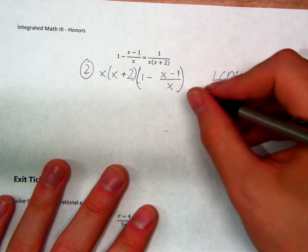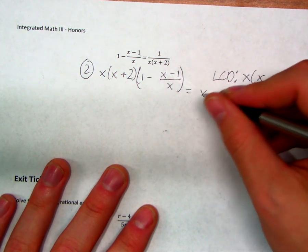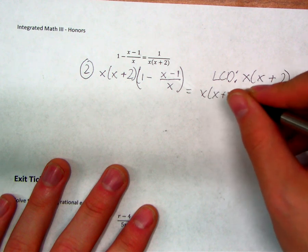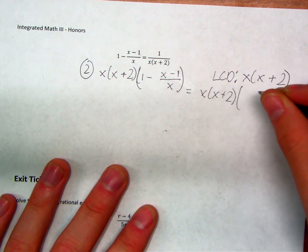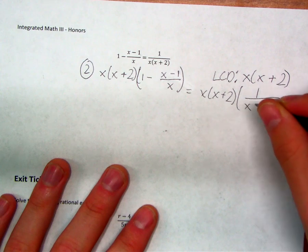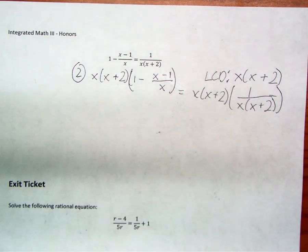I'm multiplying both sides of the equation by the least common denominator, x times x plus two, on each side of the equation.